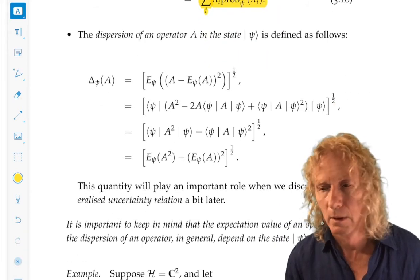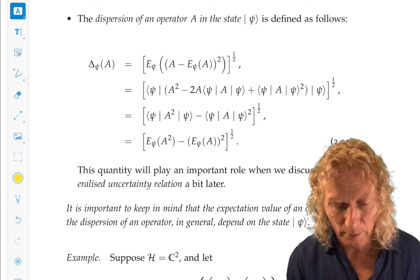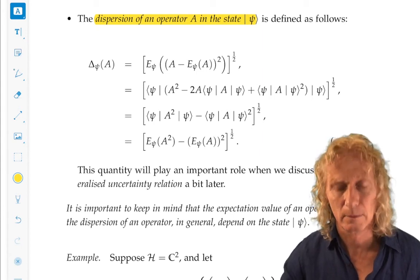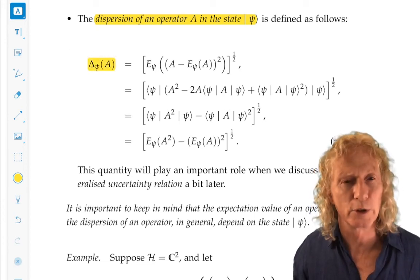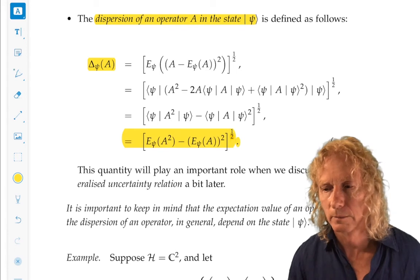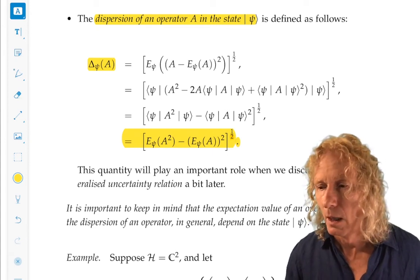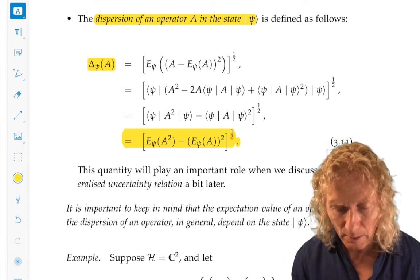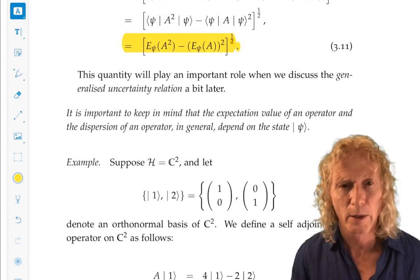Now, we have another quantity that is going to be very important when we look at uncertainties. And that is the dispersion of an operator, A, self-adjoint operator, in the state psi. We call that uppercase delta sub psi of A, dispersion. And it has a nice expression here. This is the standard deviation, or the square root of the variance. We saw the variance earlier. It's a measure of the spread about the mean, the expectation value of A. This is going to be a very important quantity later on.